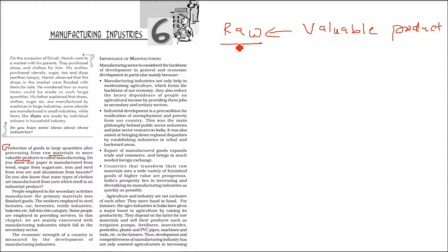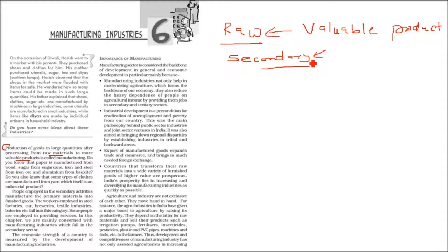Various people are employed in secondary activities. The primary activity in our country is agriculture. But manufacturing is the main secondary activity — converting primary material into finished goods. People are employed in secondary activities like steel factories, car manufacturing, breweries, textile industries, and bakeries. All these fall into the secondary category.